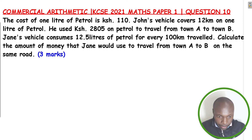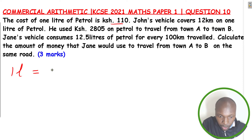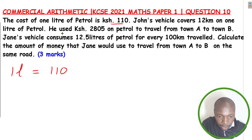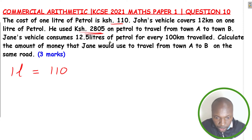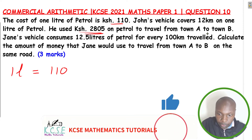We're going to begin with the cost of 1 liter of petrol, which is 110. There's some information here: John used 2,805 shillings on petrol to travel from A to B.